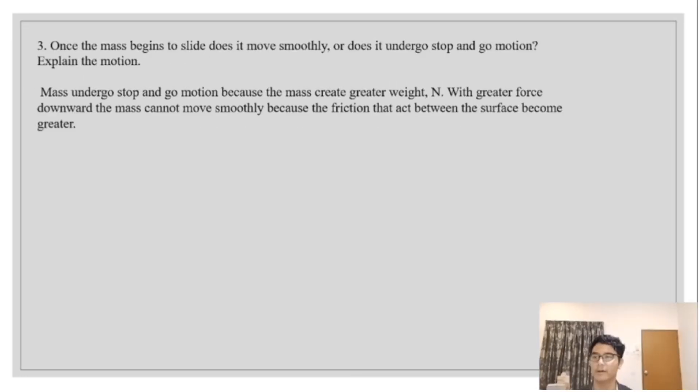Question number 3: Once the mass begin to slide, does it move smoothly or does it undergo stop and go motion? Explain the motion. Mass undergo stop and go motion because the mass create greater weight. And with greater force downward, the mass cannot move smoothly because the friction that act between the surface become greater.